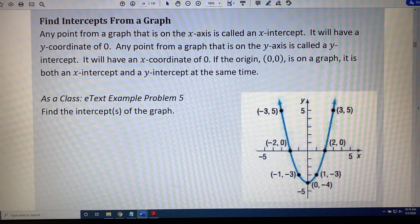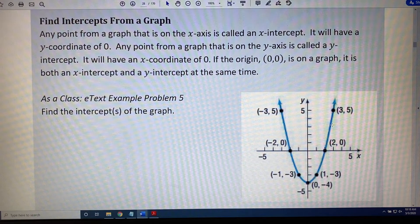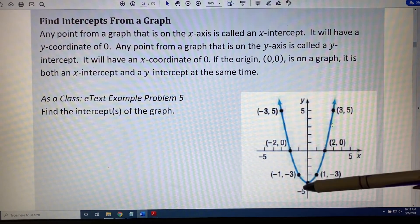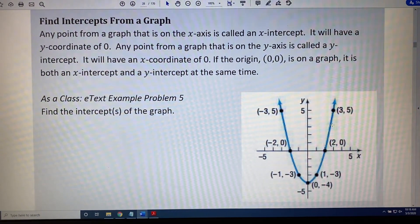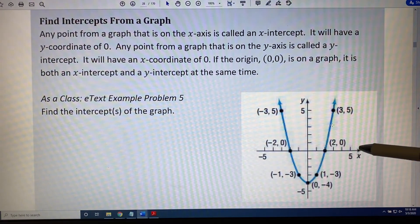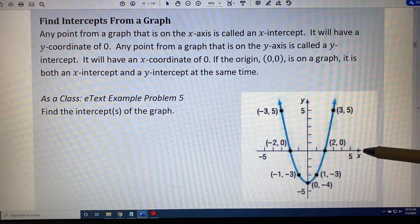It is very easy to spot x and y-intercepts when looking at a graph. For example, consider this parabola shown here in blue. If we want to know if there are any points from this parabola that are on the x-axis, we just need to see the points where they cross.